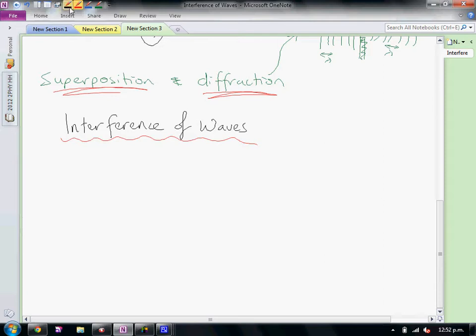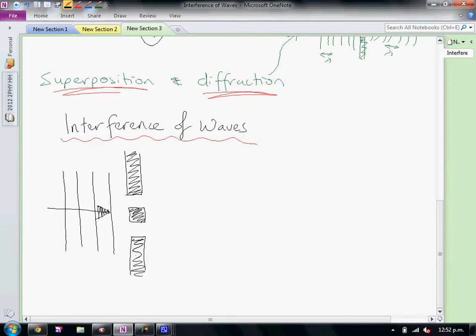We're going to have one set of waves coming in. That is the direction that they're travelling, and we're going to have something called a barrier that's got two gaps. And because it's got two gaps, it's going to create two sources of curved waves.